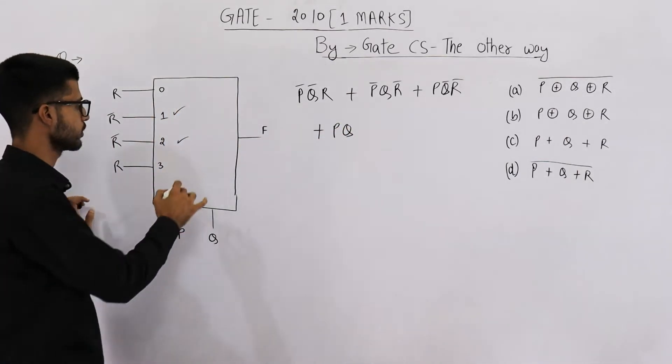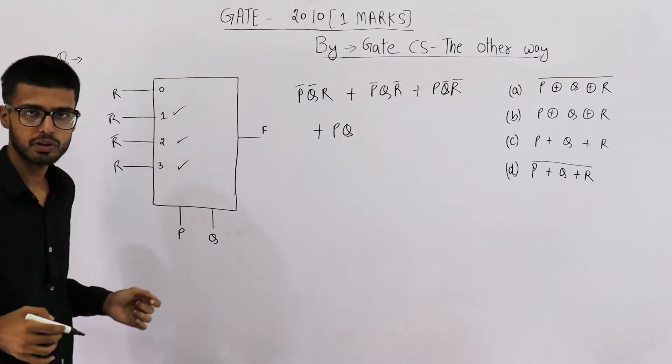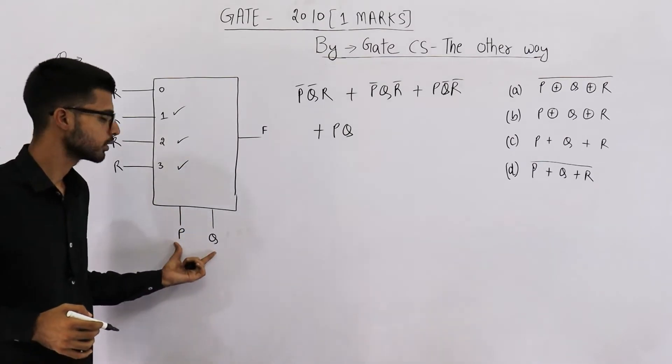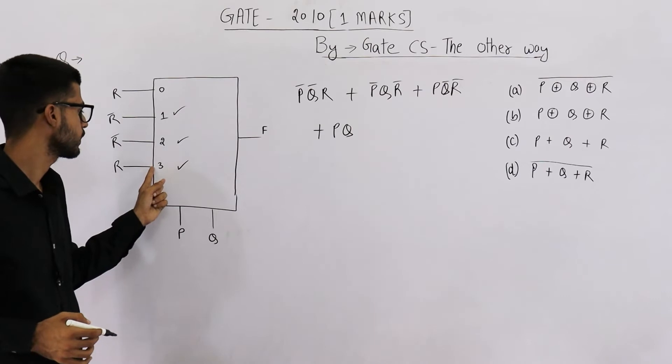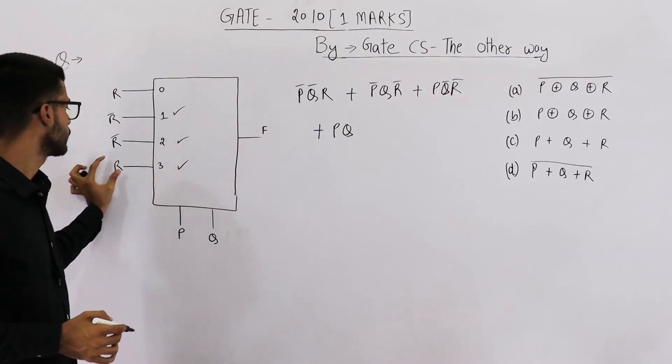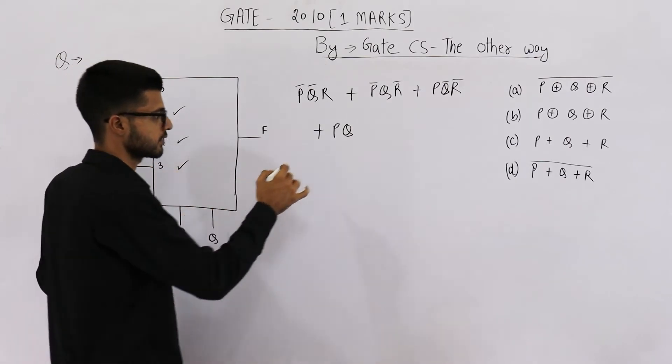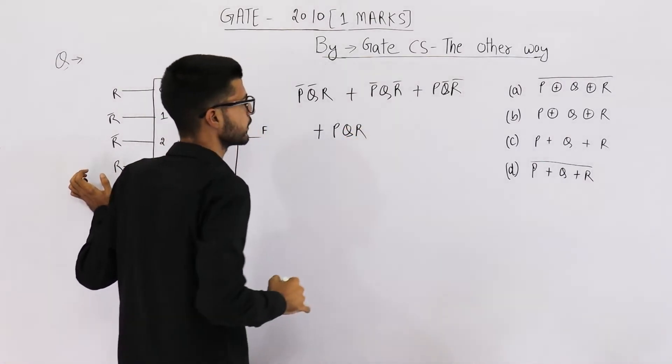So this has to be the output. It's property of multiplexer that when both the select lines are one one, it will connect this to the output. So whatever is connected here will be the output. It's r, so I'm writing r here.